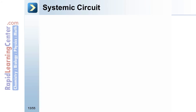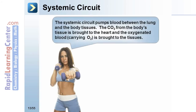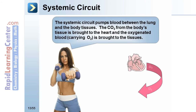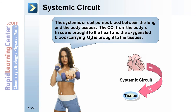The systemic circuit pumps blood between the heart and the body tissues. In this way, CO2 from the body's tissues is brought to the heart, and oxygenated blood carrying O2 is brought to the tissues.